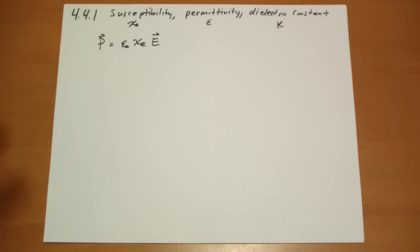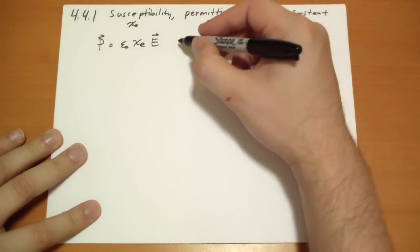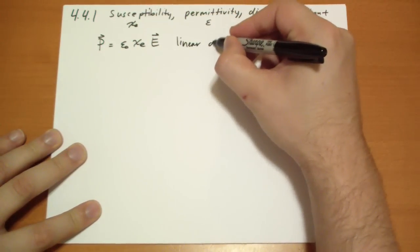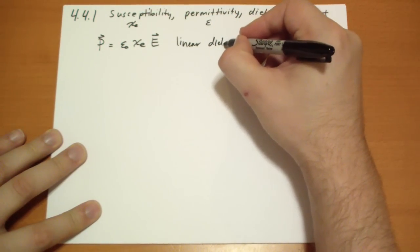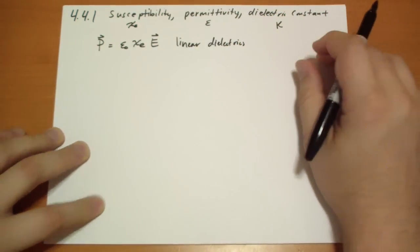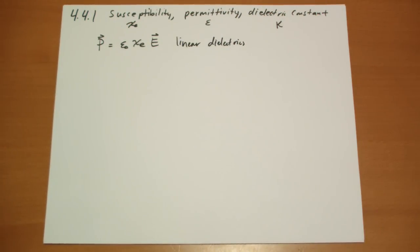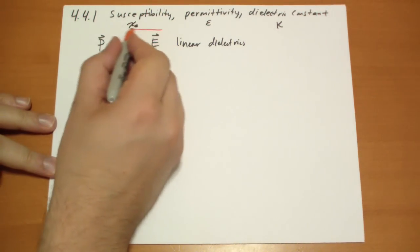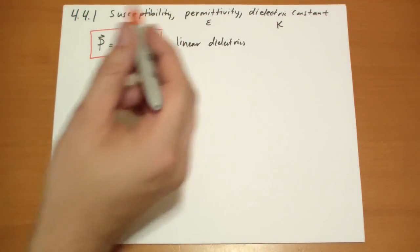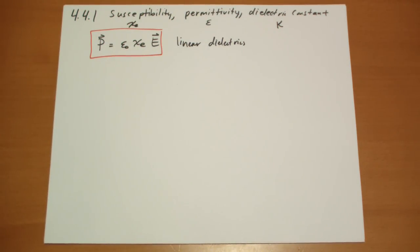A couple of notes. This rule is for linear dielectrics — other kinds of dielectrics don't follow it. Also, if you increase E too much, you're going to ionize the material, so this only holds for a range of electric fields.